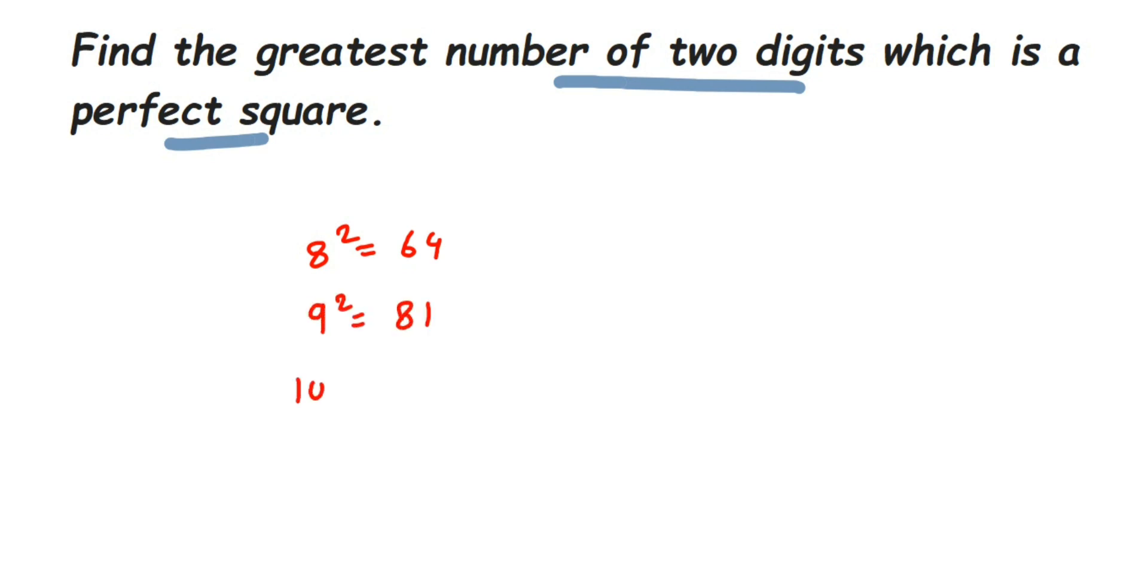But 100 is a three-digit number. We're looking for the greatest two-digit number, which is 81. Between 81 and 100, we don't have any perfect square number.